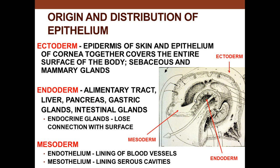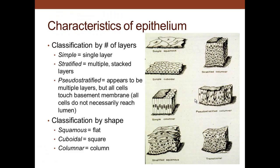From the mesoderm in the middle, you get endothelium, which lines blood vessels, and mesothelium, which lines the peritoneal cavity. So epithelium comes from all three germ cell layers.